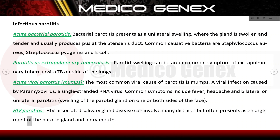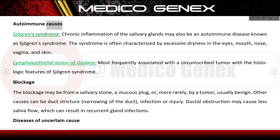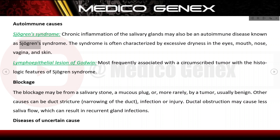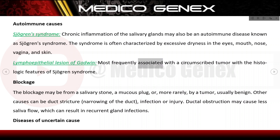HIV-associated salivary gland disease can involve many conditions but often presents as enlargement of the parotid gland and a dry mouth. Autoimmune causes include Sjögren's syndrome, a chronic inflammation of the salivary glands characterized by excessive dryness in the eyes, mouth, nose, vagina, and skin. The lymphoepithelial lesion of Godwin is most frequently associated with a circumscribed tumor with histologic features of Sjögren's syndrome.